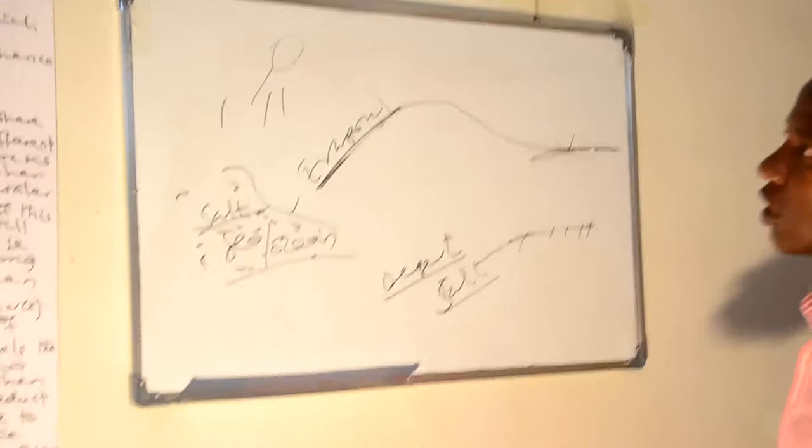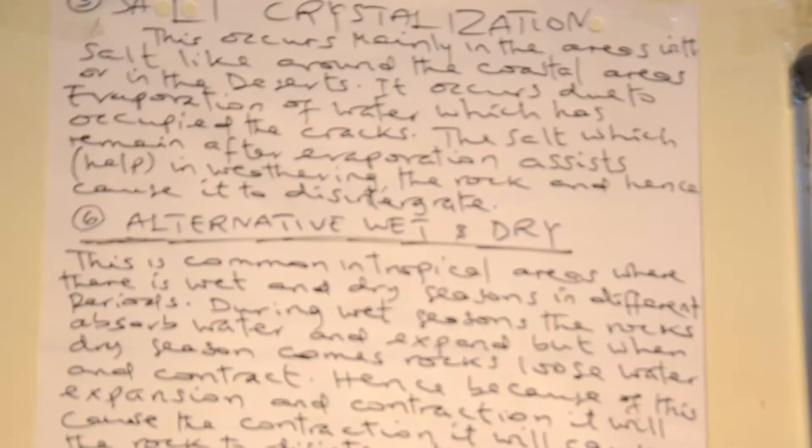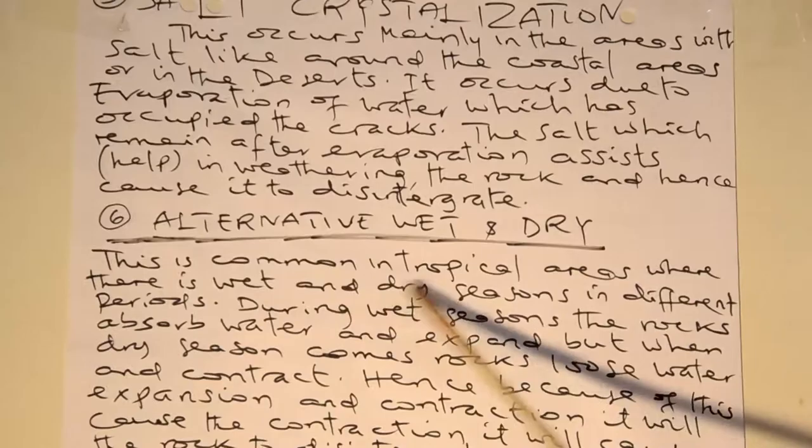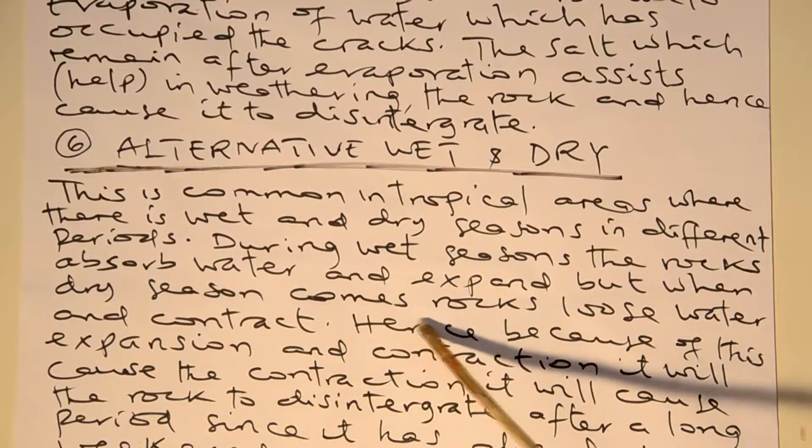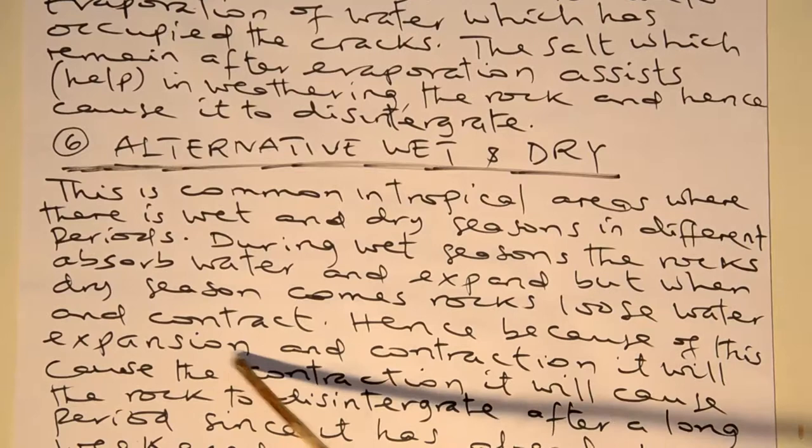Apart from salt crystallization, there is another process which is called alternative wet and dry. This is common in tropical areas where there is a wet and dry season in different periods. During the wet season, the rocks absorb water and expand, but when dry season comes, rocks lose water and contract. Because of this expansion and contraction, it will cause the rock to disaggregate after a long period since it has already been weakened.